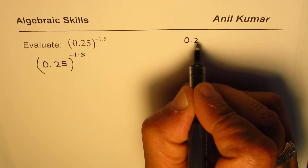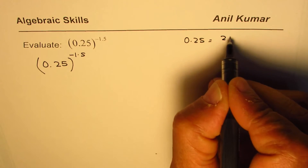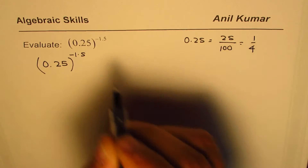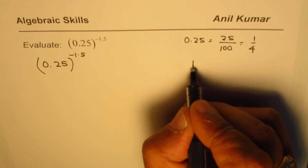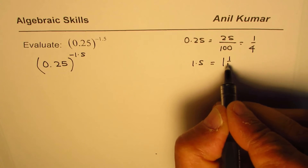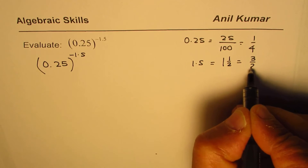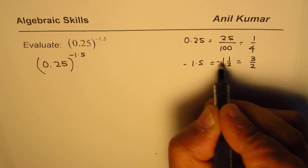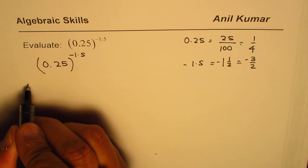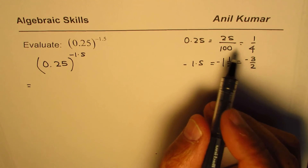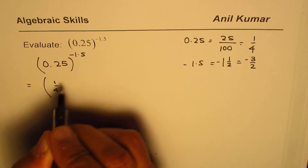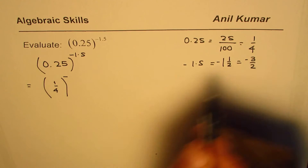0.25 can be written as 25 over 100 and simplified as 1 over 4. Now 1.5 means 1 and a half, which we can write as 3 over 2, and since it is minus, it will be minus 3 over 2. So I'll rewrite the given expression as 1 over 4 to the power of minus 3 over 2.